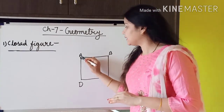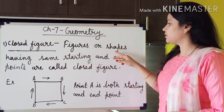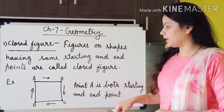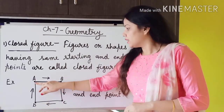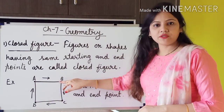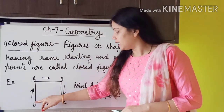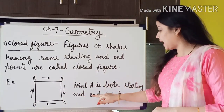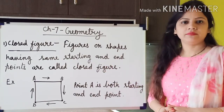In a closed figure, the starting and end points are the same. Figures or shapes having the same starting and end points are called closed figures. I made 4 points A, B, C, and D, then started from point A, drew a line to B, then B to C, then C to D, then D to A. So point A is both the starting and end point. Just pause this video and write these things in your maths copy.